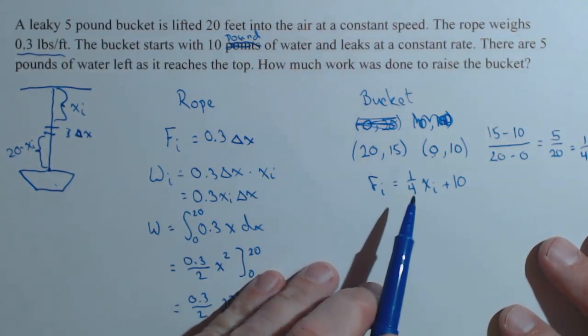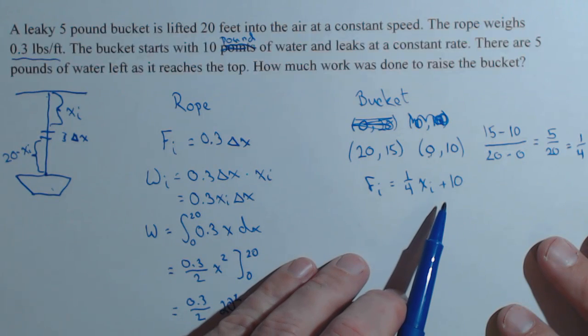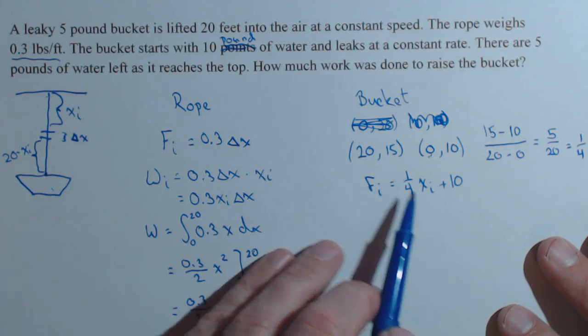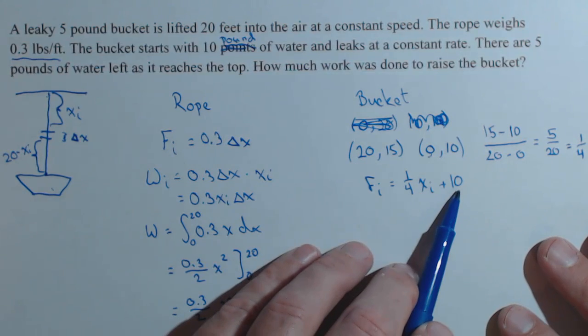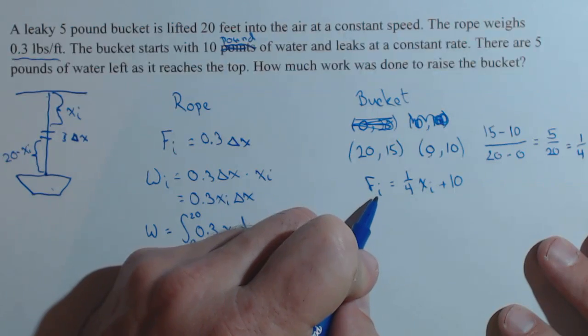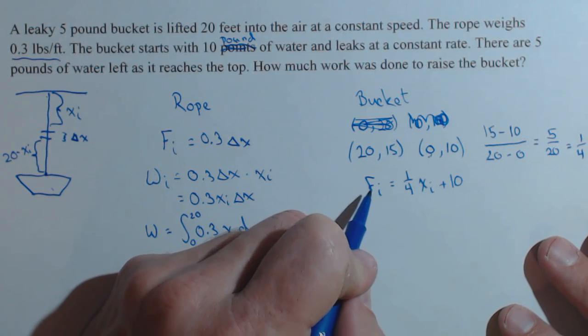So for any given slice, for any given x value, this would give us the total force on the bucket. And if we check, when x is 20, we get a total of 15. Now, we need to turn this into a work problem.